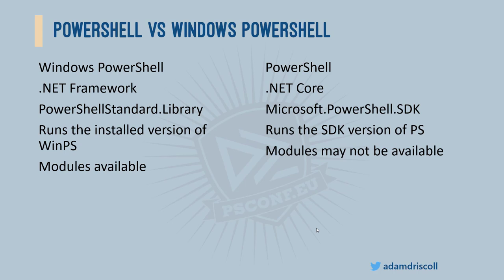Using the PowerShell Standard Library makes the assemblies much smaller because you're not including the entire PowerShell SDK, and the modules are all available on the box because those are installed with Windows. When you're hosting in PowerShell itself, you have to include the Microsoft PowerShell SDK NuGet library — that's the actual PowerShell runtime. This makes it more portable and self-contained, pinning your PowerShell host to a particular SDK version. However, if PowerShell itself is not installed, you may not have a lot of the built-in modules available.